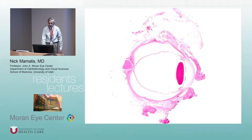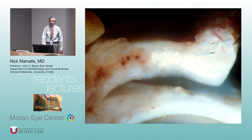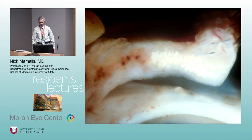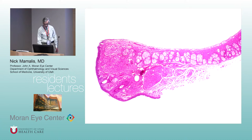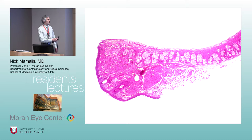This is quick pattern recognition. Layers of the eyelid: skin, orbicularis, tarsus, and conjunctiva. You can see these in cross-section.